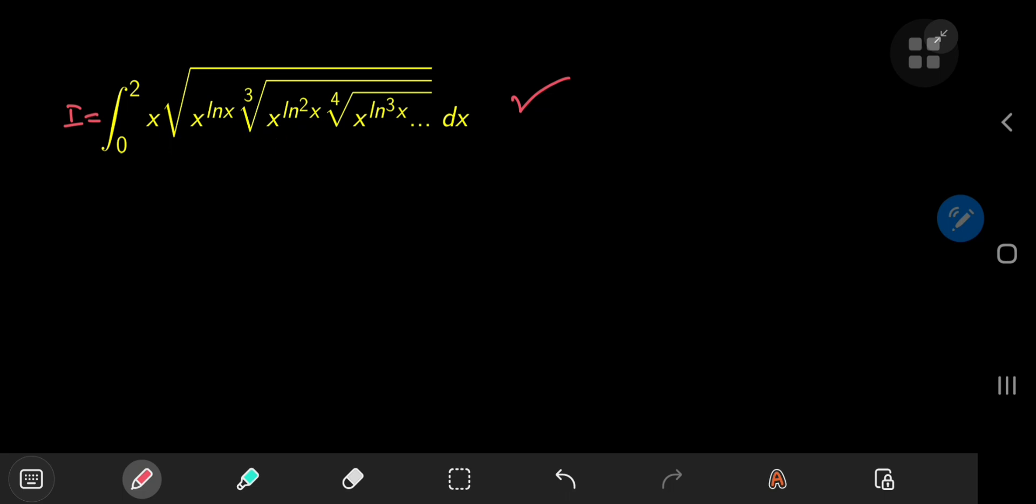And one substitution can make things look much simpler. If we let x equal e to the t, which implies that t equals the natural log of x. And this also implies that dx equals e to the t dt.